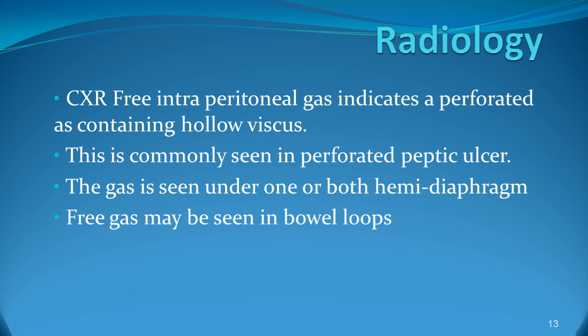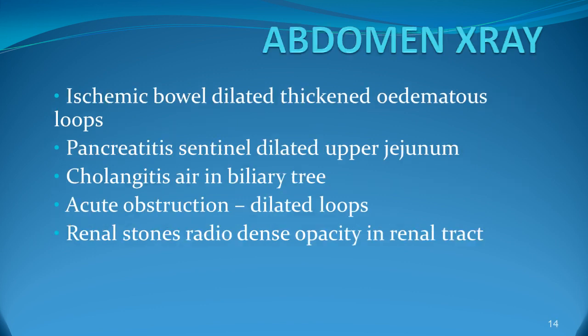Free gas can be seen around the bowel loops and the inner border of the peritoneal lining is visualized. Gas could be seen in the bowel wall in severe GI infections. Ischaemic bowel shows dilated, thickened, oedematous loops. Pancreatitis will show a sentinel dilated upper jejunum. In cholangitis, there may be air in the biliary tree and dilated bowel loops in acute obstruction.